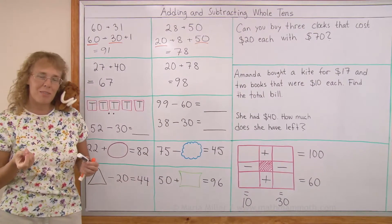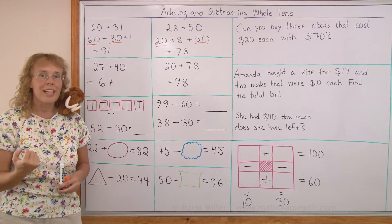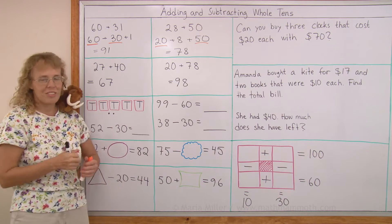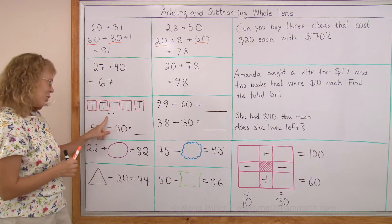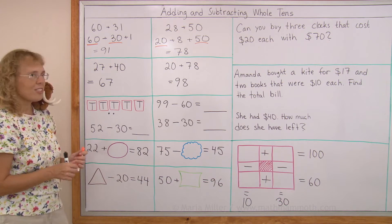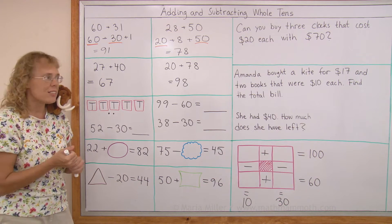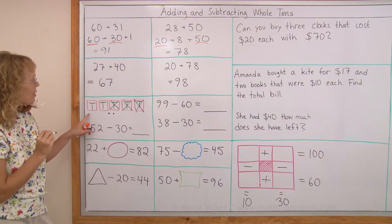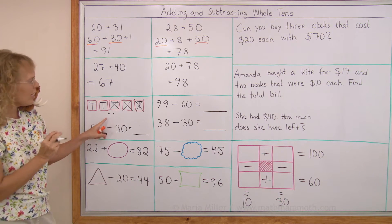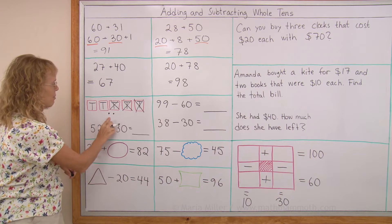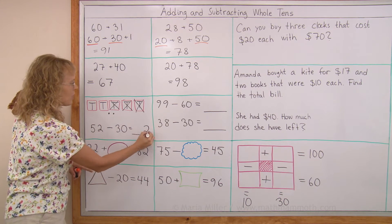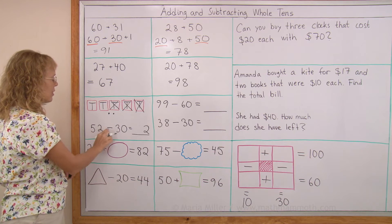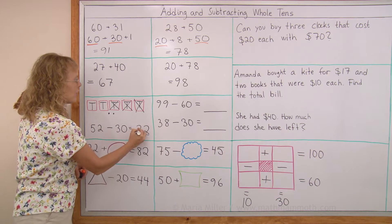Now we'll do the same with subtraction — subtracting whole tens. 52 minus 30. This model here shows you 52: 5 tens and 2. We take away 30, so that means 3 tens go away. I'll cross them out. What is left is 2 tens and 2. Notice these 2 ones — nothing happened to them. So that 2 is still gonna be there. There was just 5 tens take away 3 tens, and 2 tens are left.